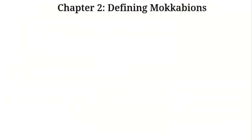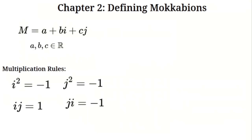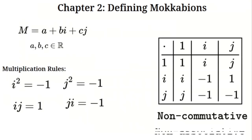A Mokabian is a number of the form a + bi + cj, where a, b, and c are real numbers, and i and j are imaginary units obeying these rules: i² = −1, j² = −1, i·j = 1, and j·i = −1. Unlike real and complex numbers, Mokabians are non-commutative and non-associative because i·j ≠ j·i. This property fundamentally changes how multiplication behaves.